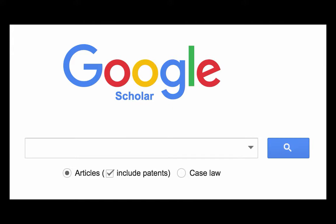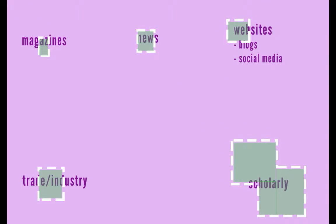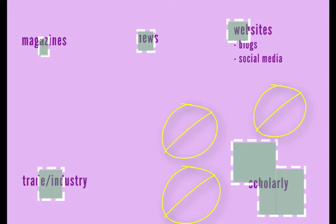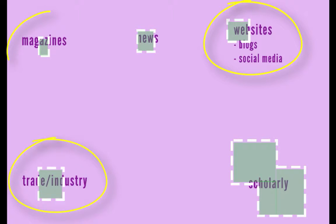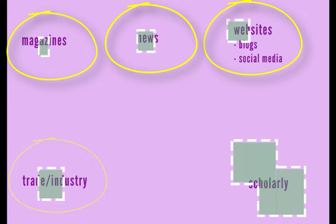So what about Google Scholar — Google's specific search that claims to search for just scholarly materials? Google Scholar does include a whole lot more scholarly sources than Google, and a lot fewer of the other types of sources. But it's not comprehensive, it doesn't include all the scholarly sources that are out there, and it can get confused — including some reputable-looking but not scholarly sources, like trade and industry sources, websites, magazines, and newspapers.